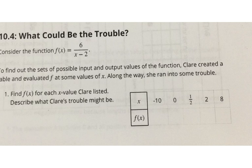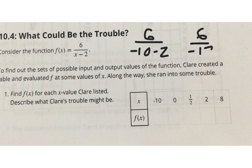So let's look here. We're looking at a different function: 6 divided by x minus 2. Here's my function. We want to find the set of all possible input and output values of the function. So Claire created a table and evaluated f at some of the values of x. Along the way, she ran into some trouble. Let's find f(x) for each x value Claire listed. So all we're doing is we're making an input-output list. So here she has input negative 10 in for x. So what would be the output if she plugged in negative 10 for x? So we could do 6 over negative 10 minus 2, which is 6 over negative 12, which is negative a half.